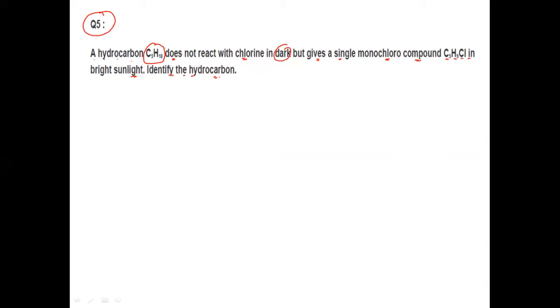Now see, you know this formula is C5H10. If we look at the formula CnH2N, this CnH2N formula belongs to two types of hydrocarbons. One is alkene and the other we discussed is cycloalkane.